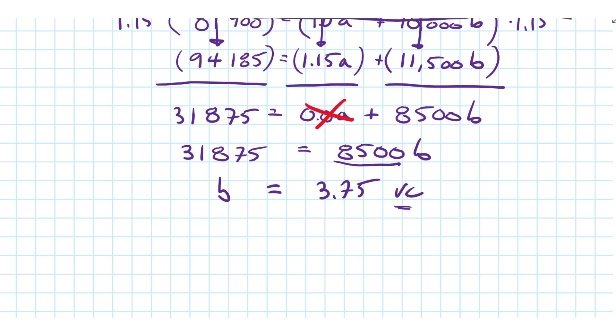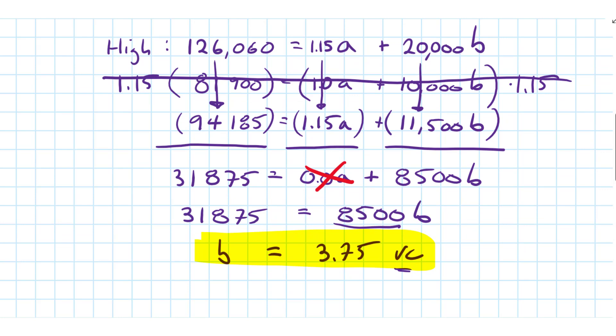So that's step one, we solved for b. Now the next step, we just have to plug b into either equation and we can get the fixed cost. I like this nice round low equation because we have that 10,000 there, so I'll go with that one.